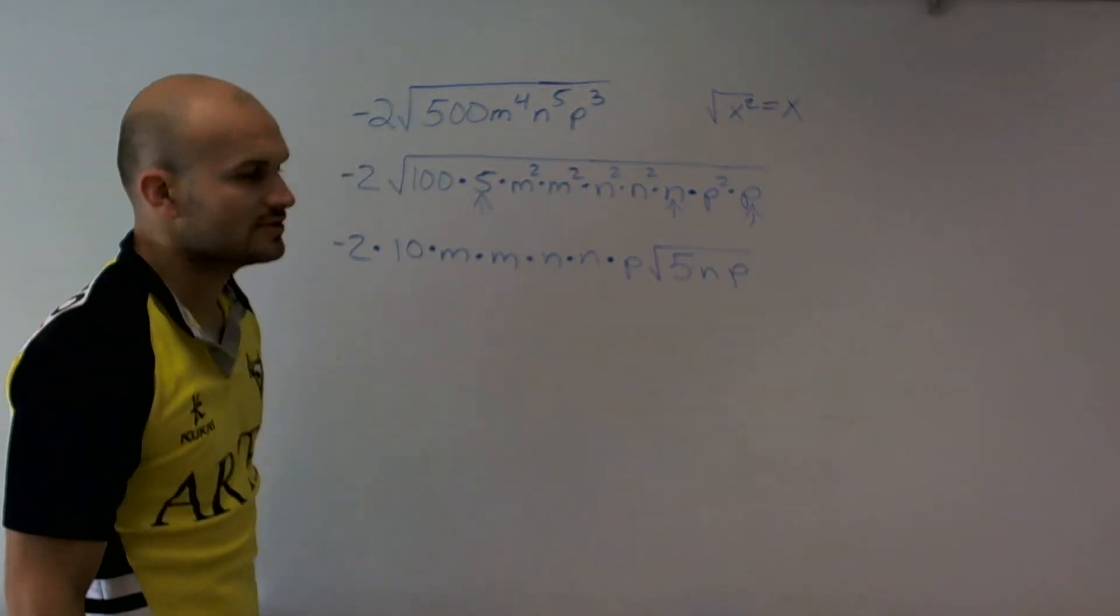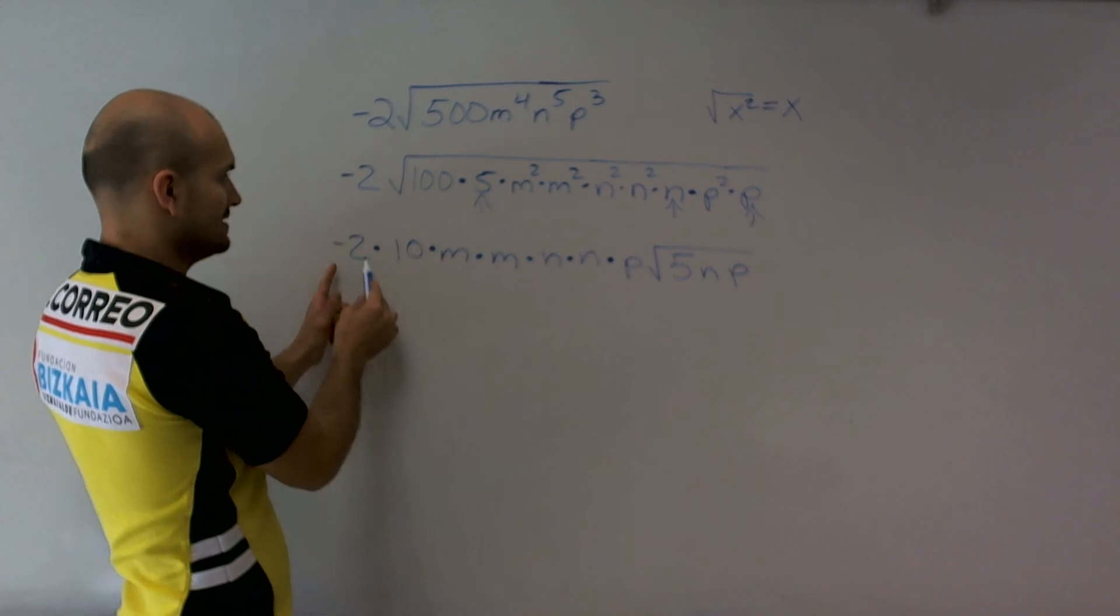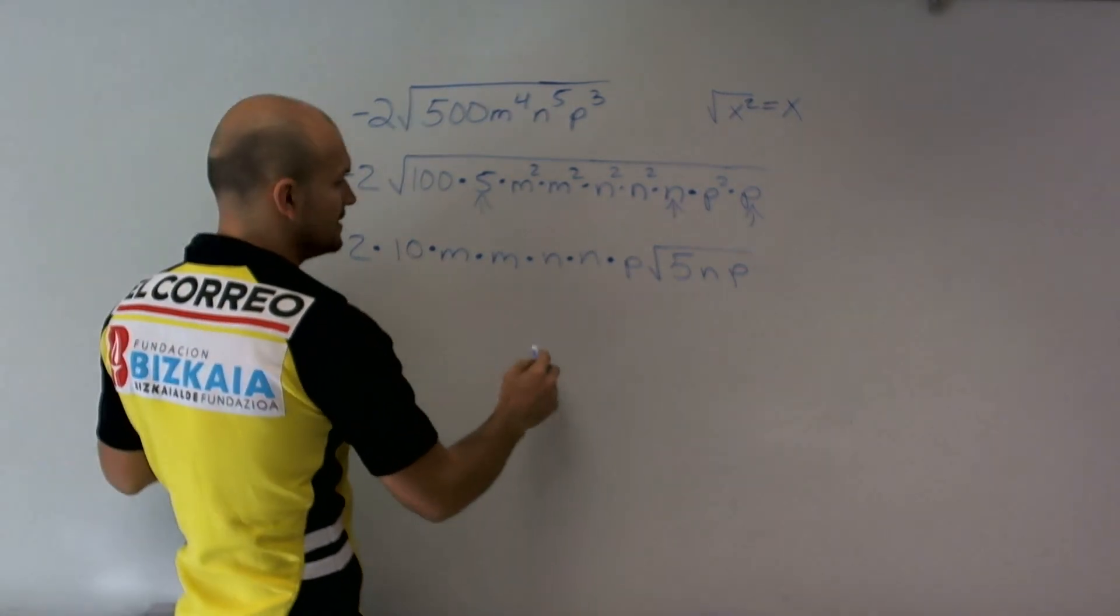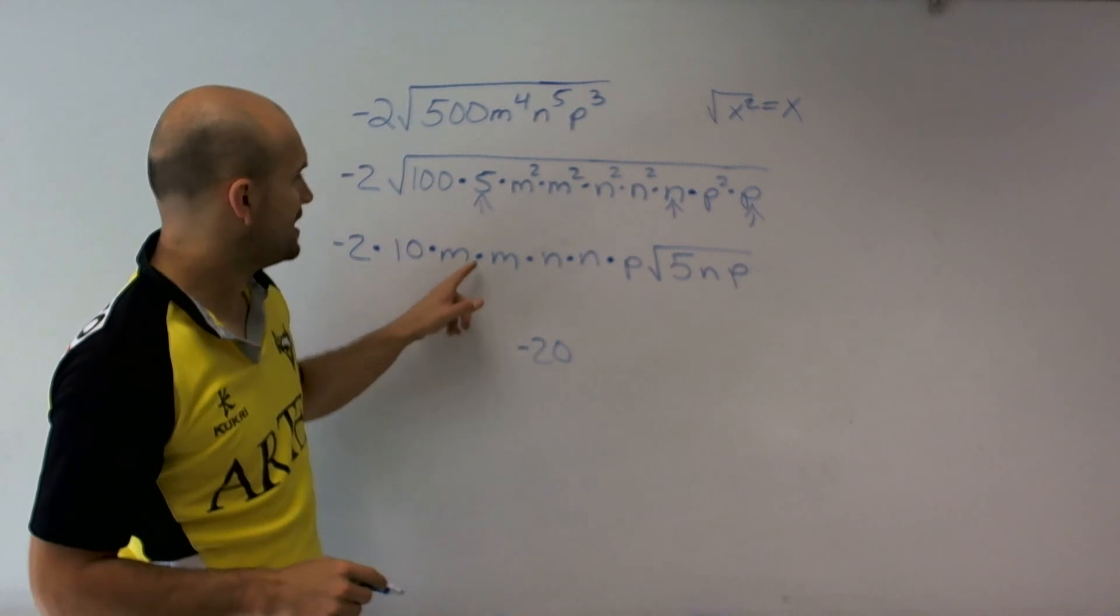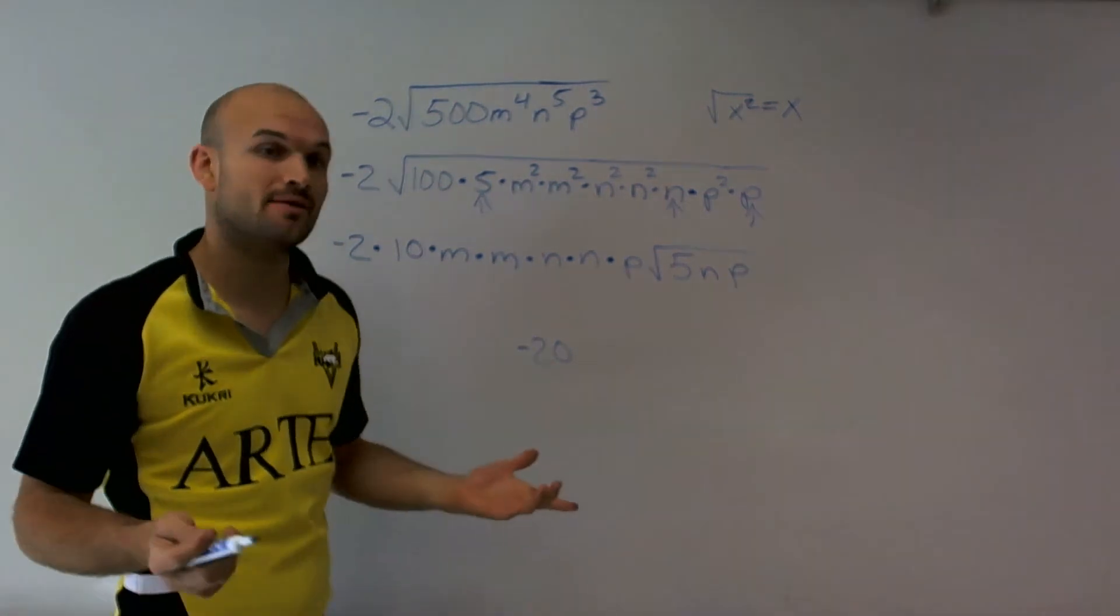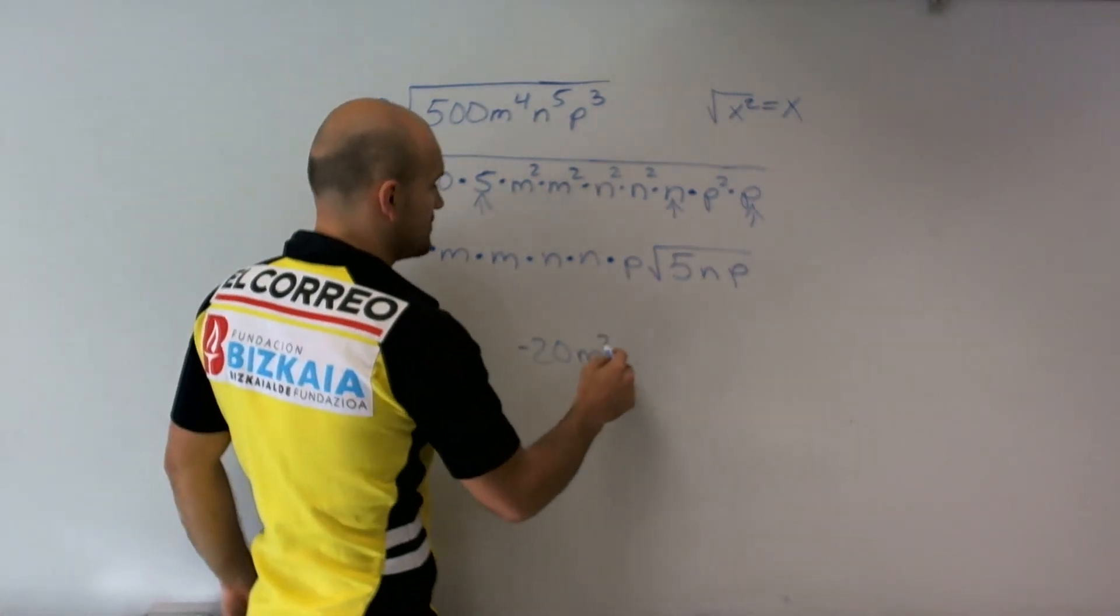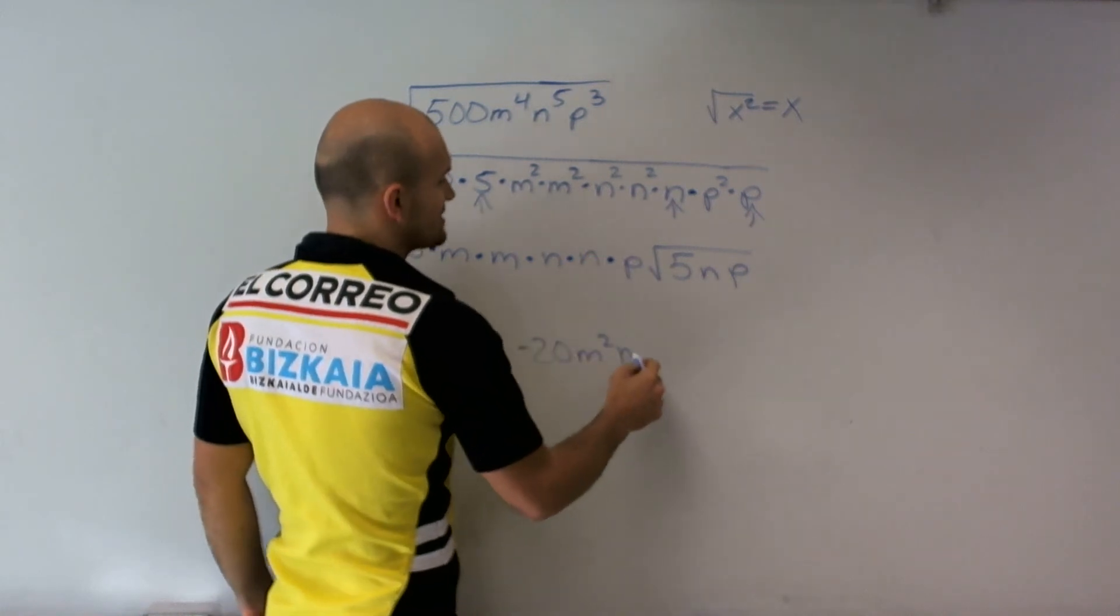So now we can simplify this again. Negative 2 times 10 is going to give me negative 20. m times m is going to give you m squared. n times n is going to give you n squared.